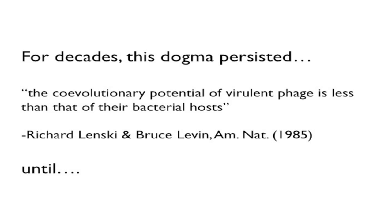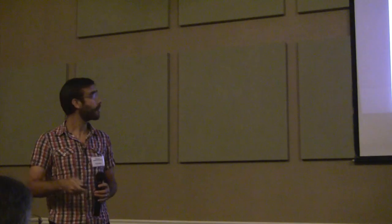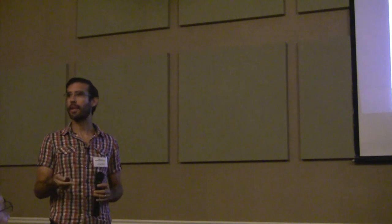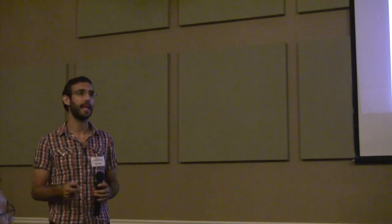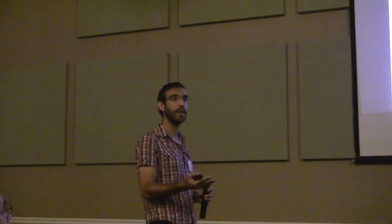This really became the dogma for decades — that it was very easy to evolve resistance and counter-resistance a few times, but eventually the bacteria would win. Rich Lenski and Bruce Levin are two of the best authorities on this topic. Quoting from them: 'the co-evolutionary potential of virulent phage is less than that of their bacterial hosts.' This was informed by the fact that people at the time didn't think phage or viruses were altogether important in an environmental sense — they were used for molecular biology discoveries, but not necessarily important in ecology.